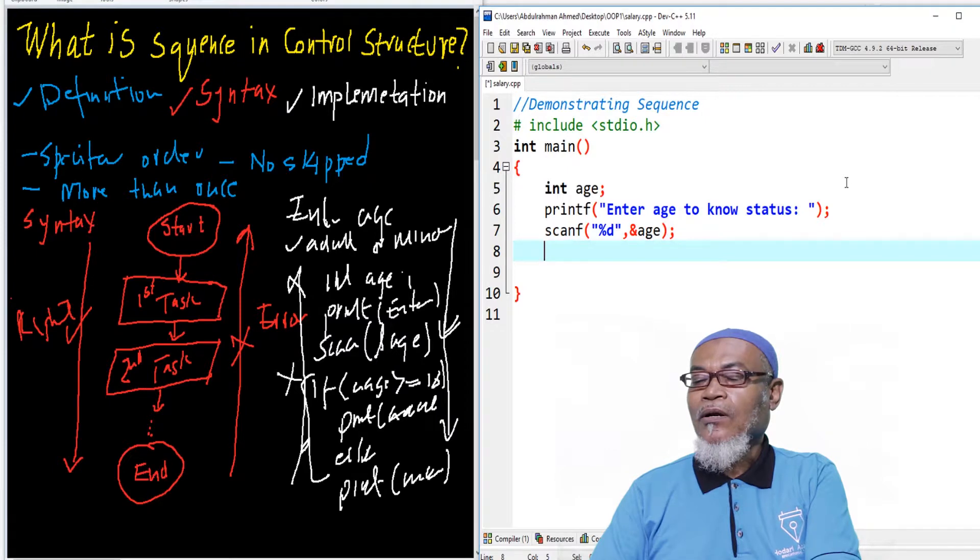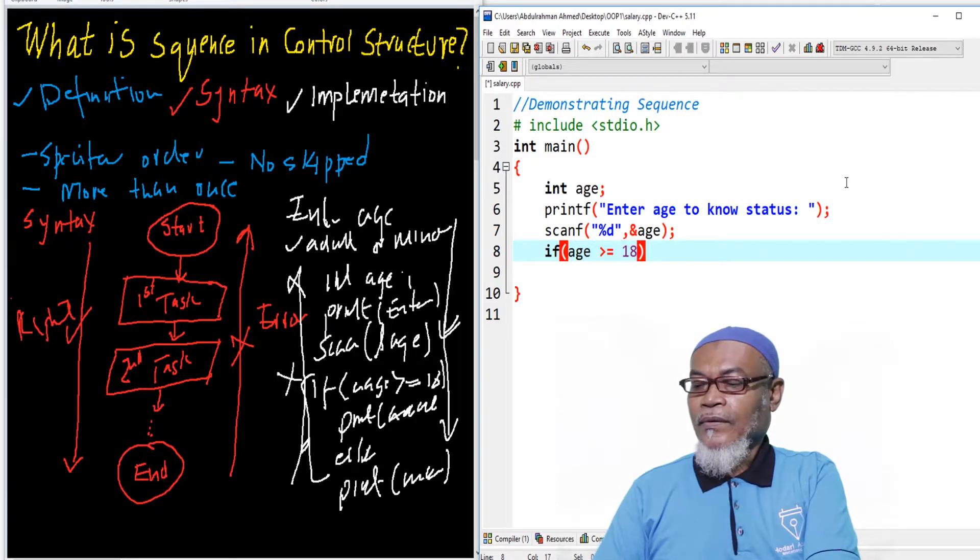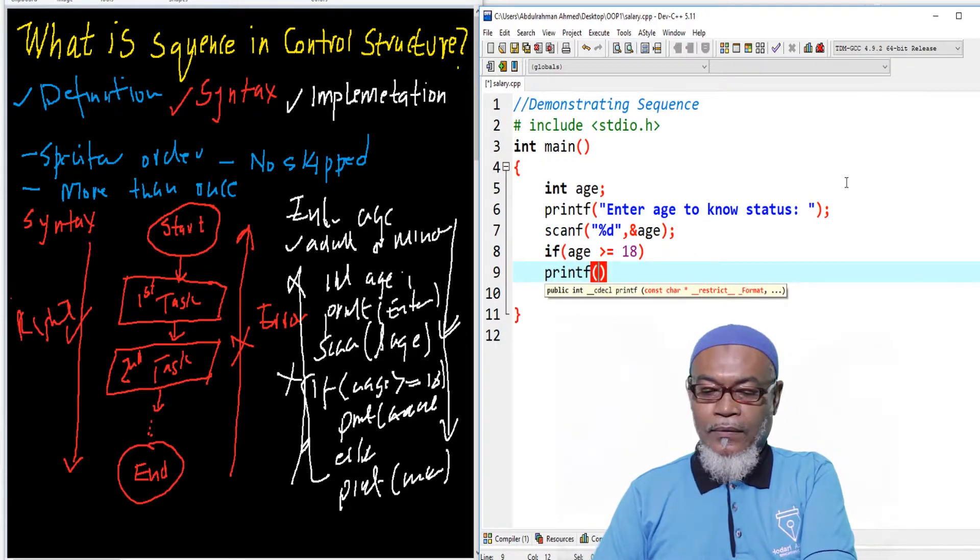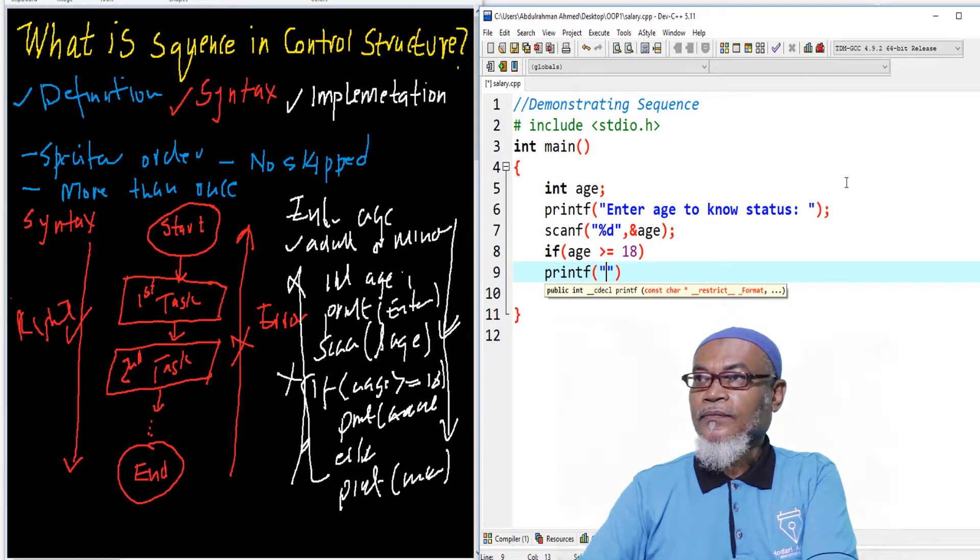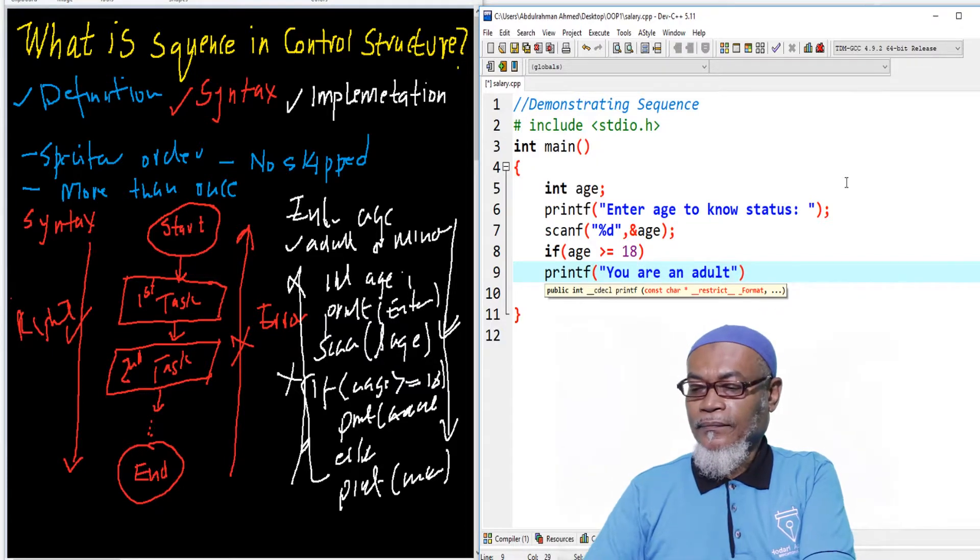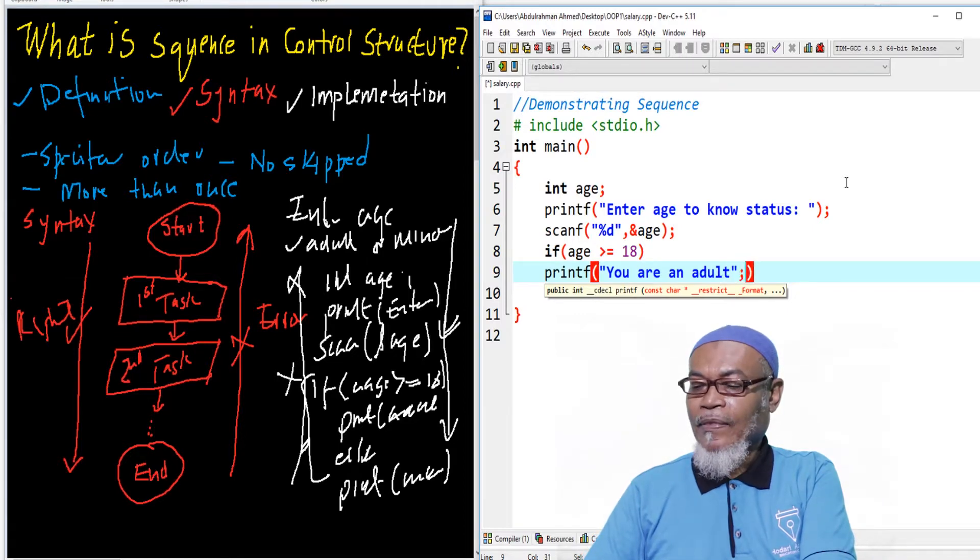From the address of age, now we are putting up an if statement. So if age is greater than or equals to 18, you know, what are we supposed to do? We are supposed to print, you are an adult. And we terminate.